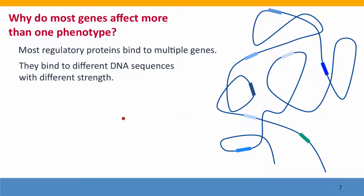It's worse if we think about regulatory proteins, because regulatory proteins don't just bind to a single gene. Whereas catalytic reactions generally have the enzyme catalyse one step, regulatory proteins typically bind to more than one place in the genome.